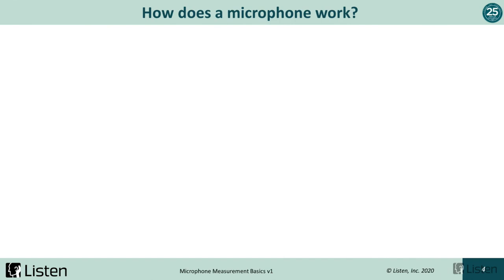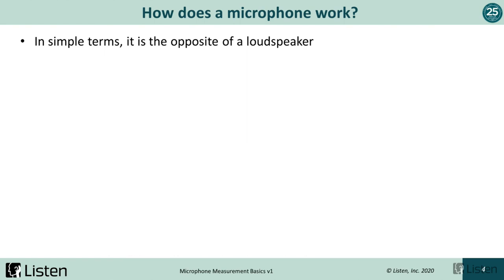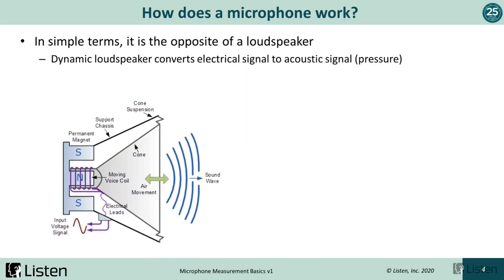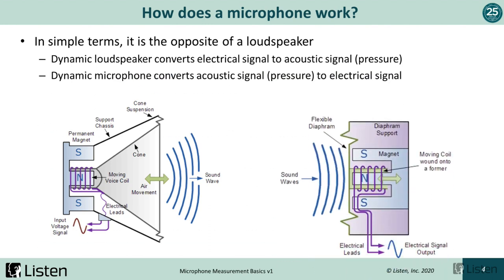The first part here is: how does a microphone work? In really simple terms, it's sort of like the opposite of a loudspeaker. I'm going to use a dynamic speaker and a dynamic microphone as an example. In this cutaway, we're seeing a dynamic loudspeaker converting an electrical signal to an acoustical signal. We input our electrical signal, it goes through the voice coil, interacts with the magnetic field, moves the diaphragm, and creates sound waves.